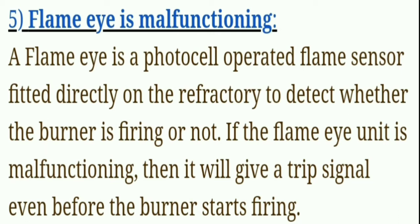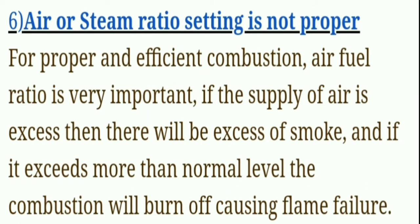Fifth, the flame eye is malfunctioning. A flame eye is a photocell-operated flame sensor fitted directly on the refractory to detect whether the burner is firing or not. If the flame eye unit is malfunctioning, it will give a trip signal even before the burner starts firing.